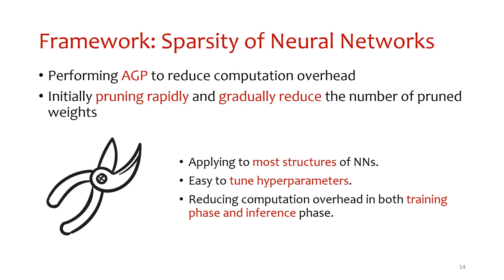To reduce the computational overhead of training personal modules on devices, we perform automated gradual pruning (AGP). AGP assigns weights satisfying a certain criterion to zero, and those trimmed weights are shut down permanently and do not participate in back propagation. The main idea of AGP is to initially prune weights rapidly and gradually reduce the number of pruned weights.